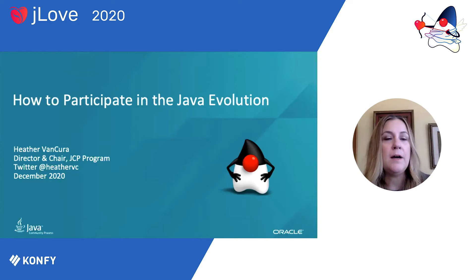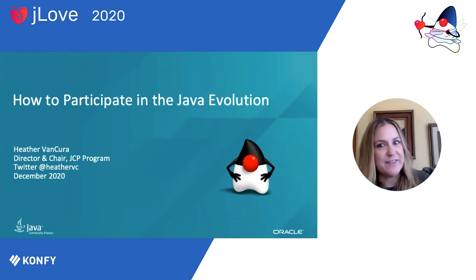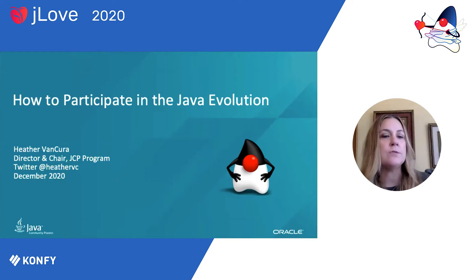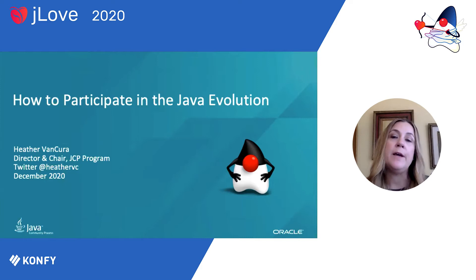As a JCP member, you get to vote in the executive committee elections and also participate in projects. Our executive committee last had a face-to-face meeting in September last year in San Francisco at the Twitter headquarters. Our membership has a nice balance for the EC seats elected by JCP membership — companies, open source groups, Java user groups, and individual developers — giving that nice representation of all our different membership categories.